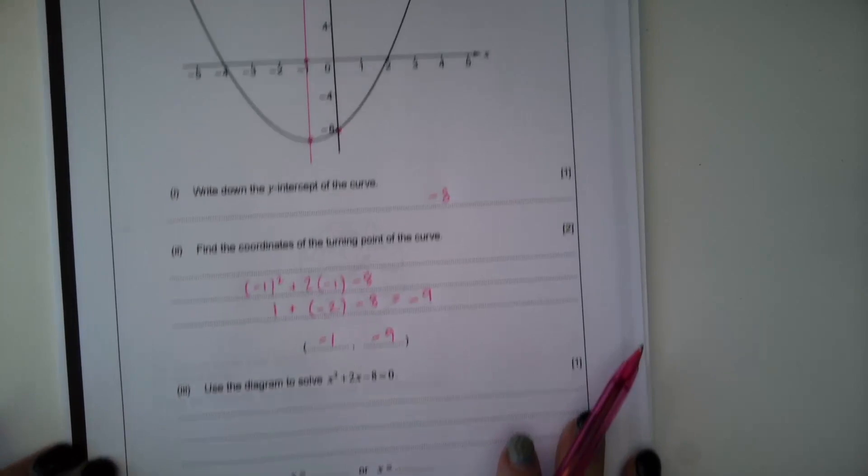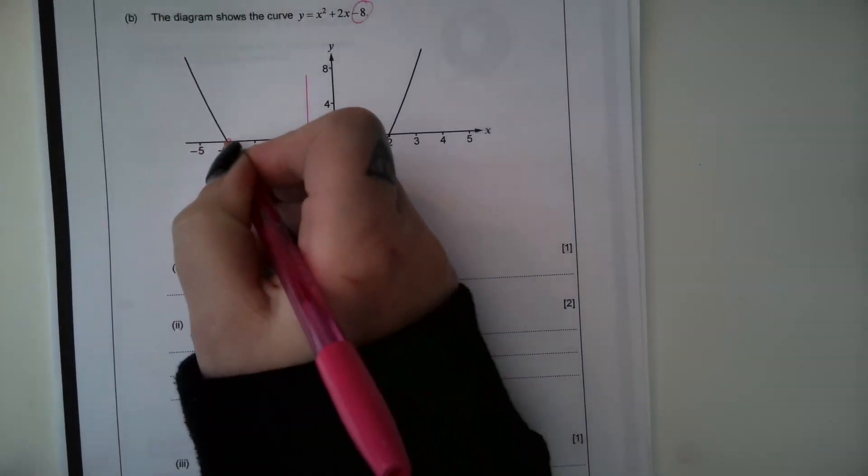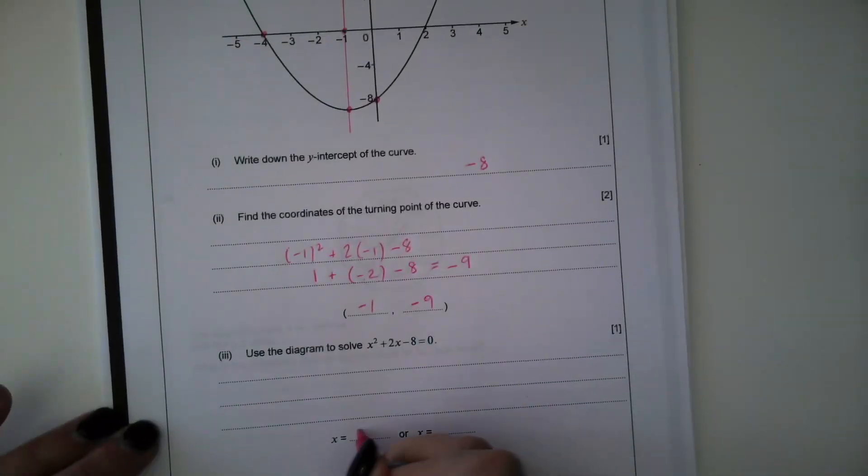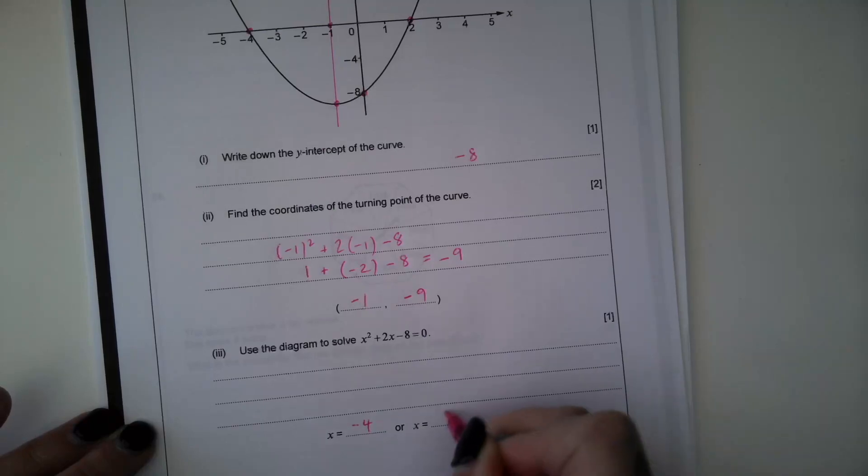So the turning point has a coordinate of negative 1, negative 9. So use the diagram to solve X squared, add 2X subtract 8. So the solutions are where it crosses the X axis. So we've got here at negative 4 and here at positive 2.